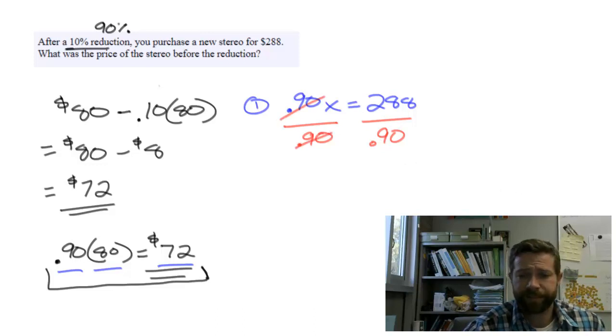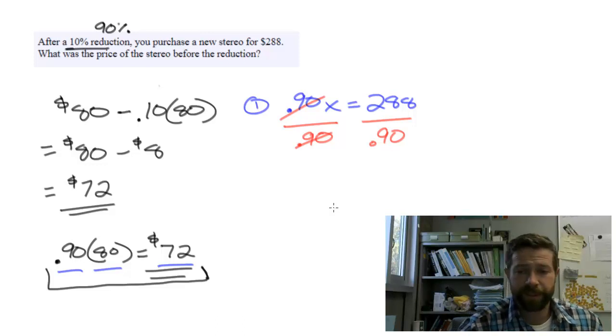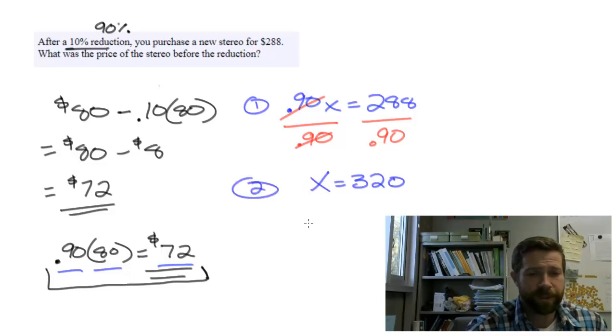If I do that calculation on my calculator, 288 divided by 0.90 gives me 320. So x equals 320, meaning the original price was $320.